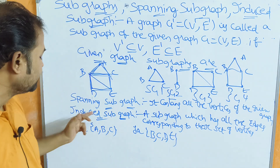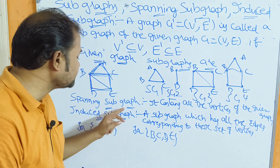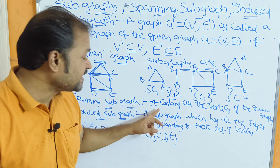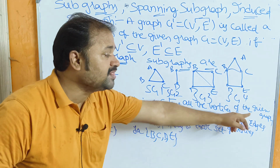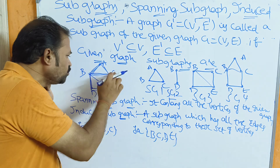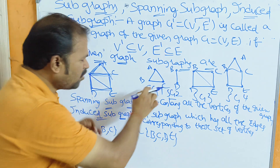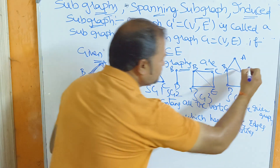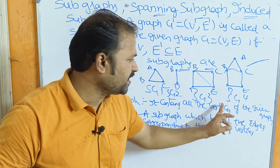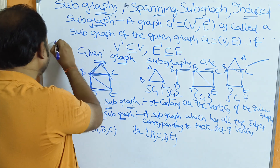We have two types of subgraphs: spanning subgraph and induced subgraph. A spanning subgraph is a subgraph that must contain all the vertices of the given graph. If this graph contains five vertices, the spanning subgraph must contain all five vertices. Among all possible subgraphs, a spanning subgraph is one that includes all five vertices — such as this one which contains vertices 1, 2, 3, 4, 5.